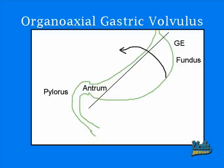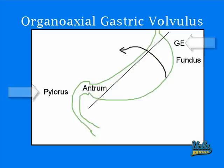In this enlarged diagram, we can see the stomach is still in green, and the axis on which the stomach turns connects the pylorus and the gastroesophageal junction. From the arrow, we see the antrum is opposite the fundus, and this causes the greater curvature to move from a left inferior position to a right superior position.